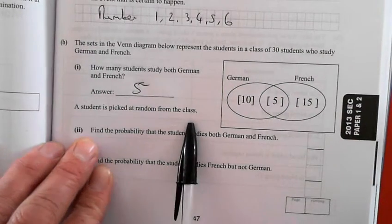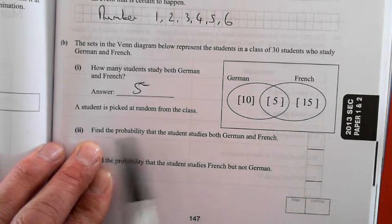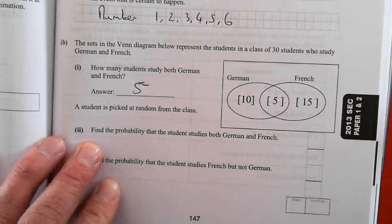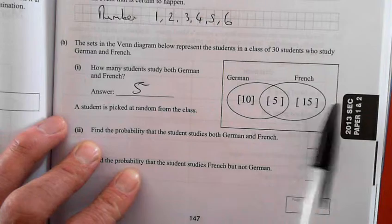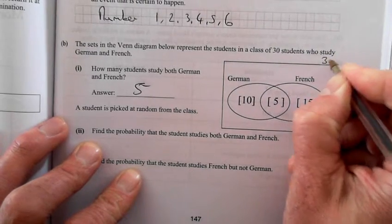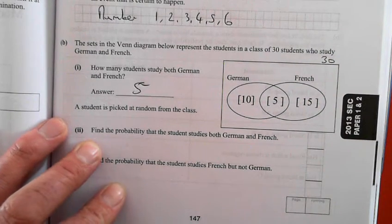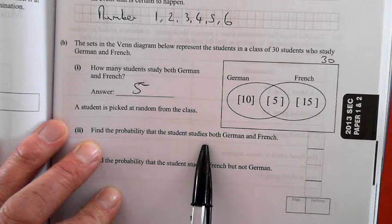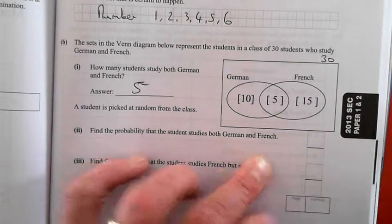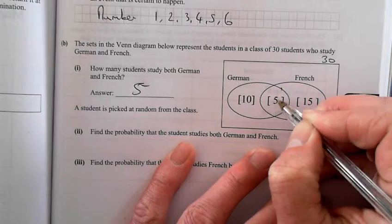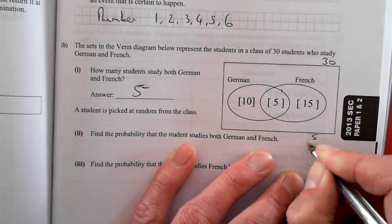A student is picked at random from the class. First of all, what is the total number in the class? 30. So you write the total number outside. Find the probability the student studies both German and French. German and French: five over the total.